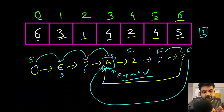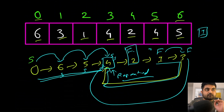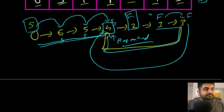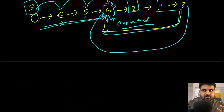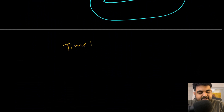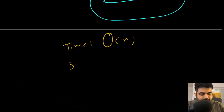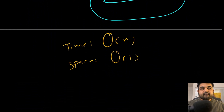This is the whole approach. The distance from where fast and slow meet to the starting pointer always equals the distance to the cycle entry point — allowing us to find the duplicate without extra space and without modifying the array. Time complexity is O(n) since we iterate the array a couple of times, and space complexity is O(1).